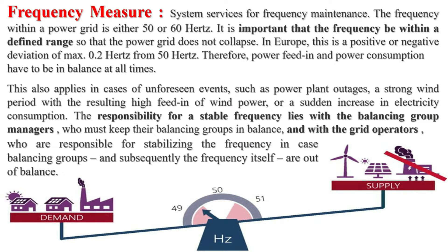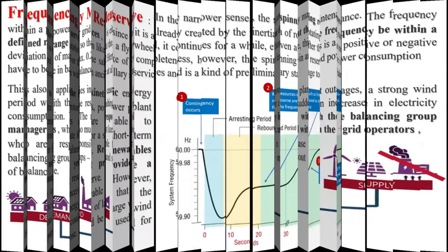Reactive Power and Voltage Control: Voltage Control and Reactive Power Management are two facets of an ancillary service that enables reliability of the transmission networks and facilitates the electricity market on these networks. Reactive power can be used to compensate for voltage drops, but must be provided closer to the loads than real power needs.